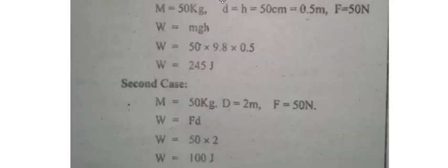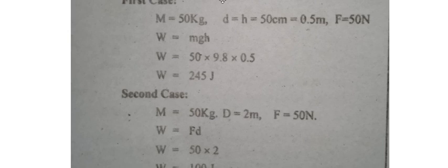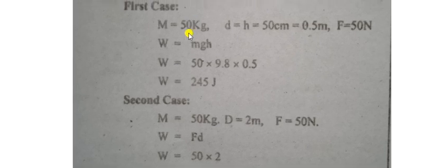In the first case, mass is 50 kg and height is 0.5 meters. The work done will equal the potential energy, that is mgh. By putting the values of all these parameters, we have work equals 245 joules.